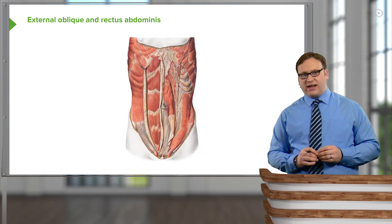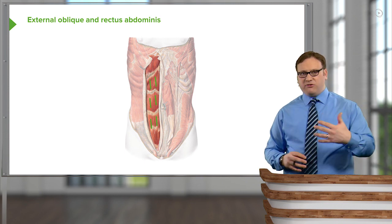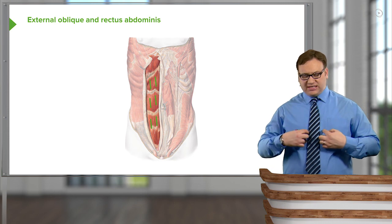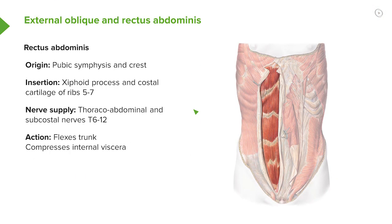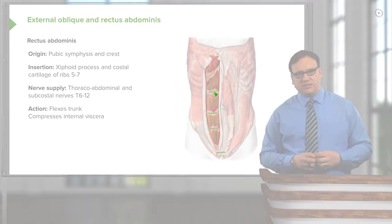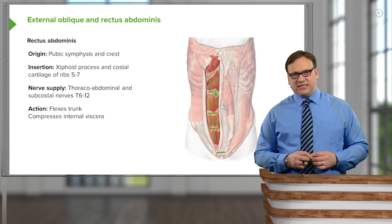Another muscle visible on this slide is rectus abdominis, which we've spoken about before. Its fibers run vertically, coming from the xiphoid sternum and costal cartilages superiorly, and originating from the pubic symphysis and pubic crest inferiorly, running either side of the linea alba. Importantly, we have a series of tendinous intersections — cartilaginous breaks within the muscle — that separate it into discrete regions, giving it its characteristic six-pack appearance. If you have limited subcutaneous fat, these bands can be clearly identified.